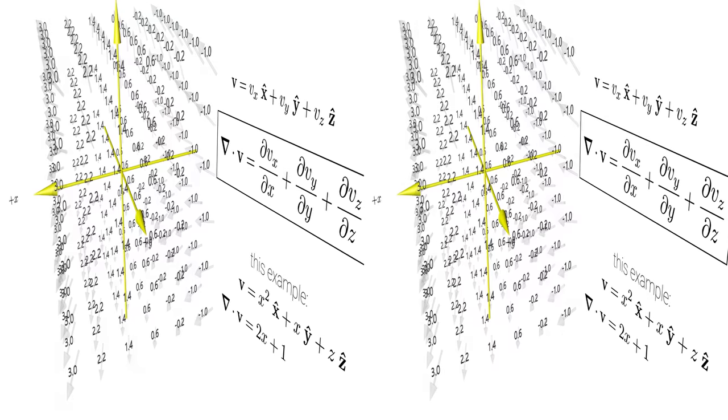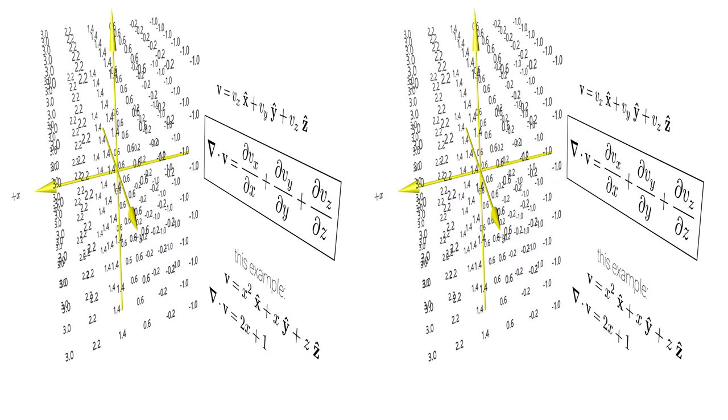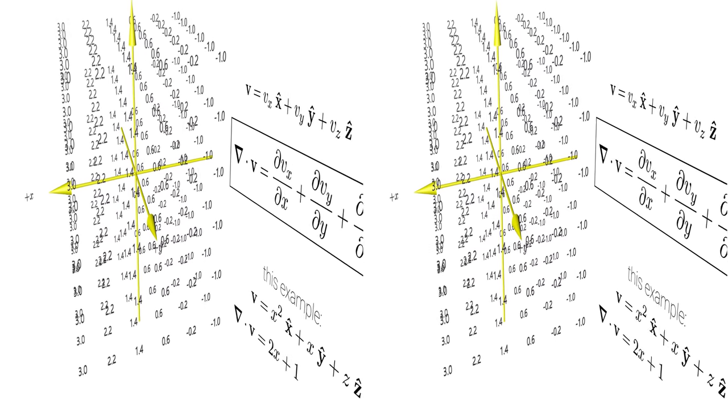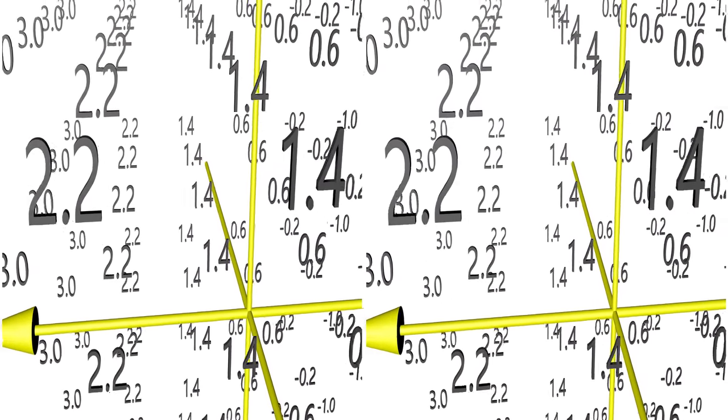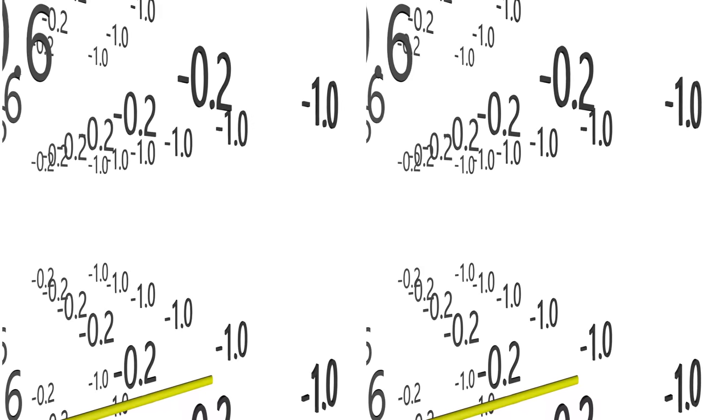The resulting scalar field is aptly called the divergence of the vector field. A point with a positive divergence can be seen as a source of the field and a point with a negative divergence as a sink of the field.